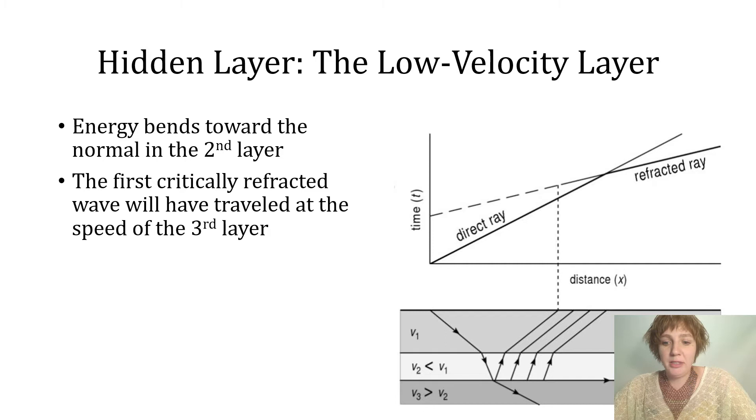So the first critically refracted wave that you're going to be able to detect back at your instrument is not going to have anything to do with it. It's not going to be representative of that second layer and is instead going to come in with a speed representing the velocity of the third layer.